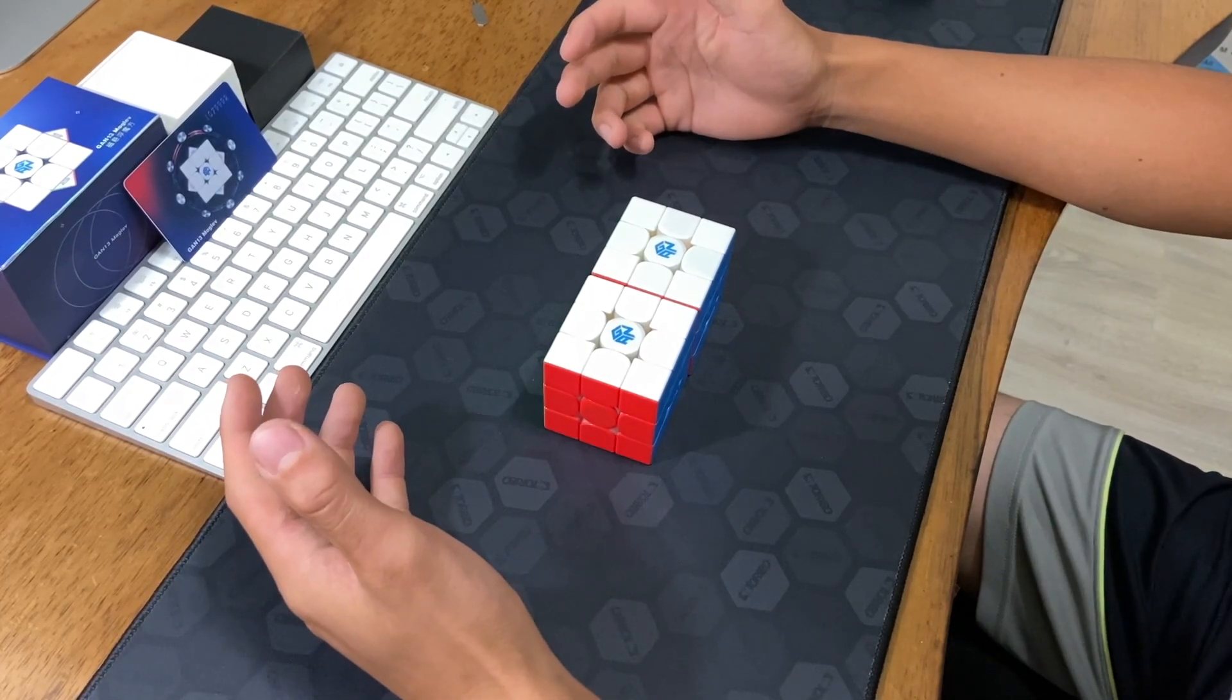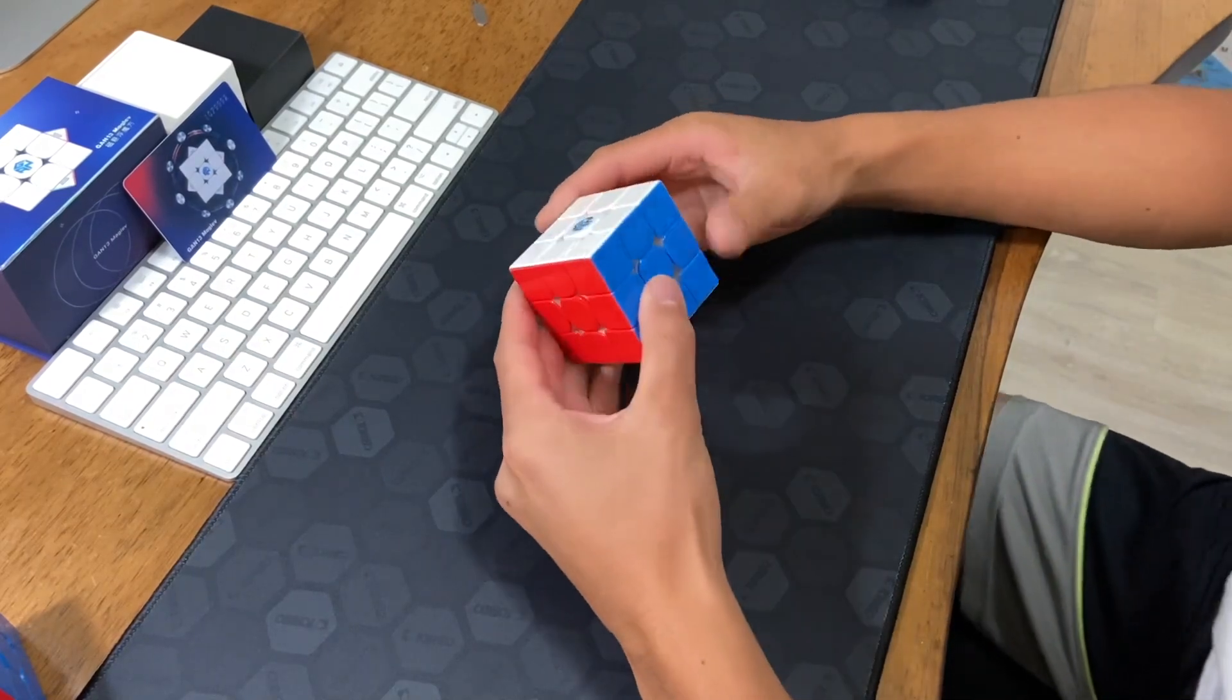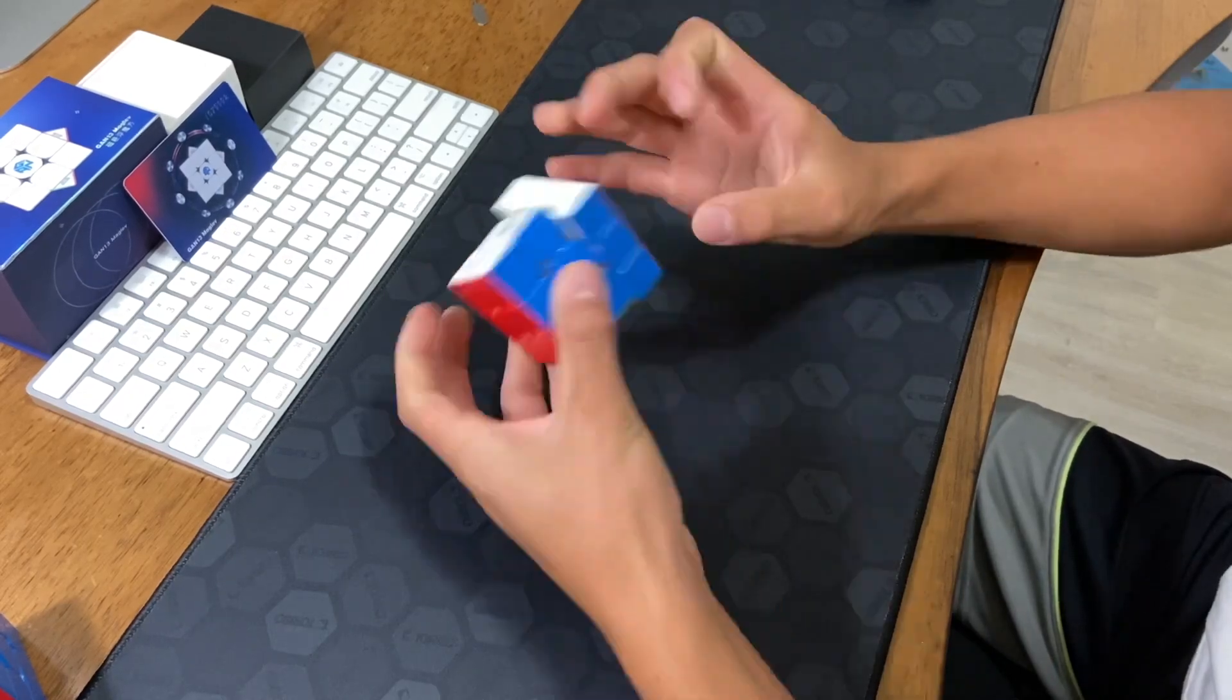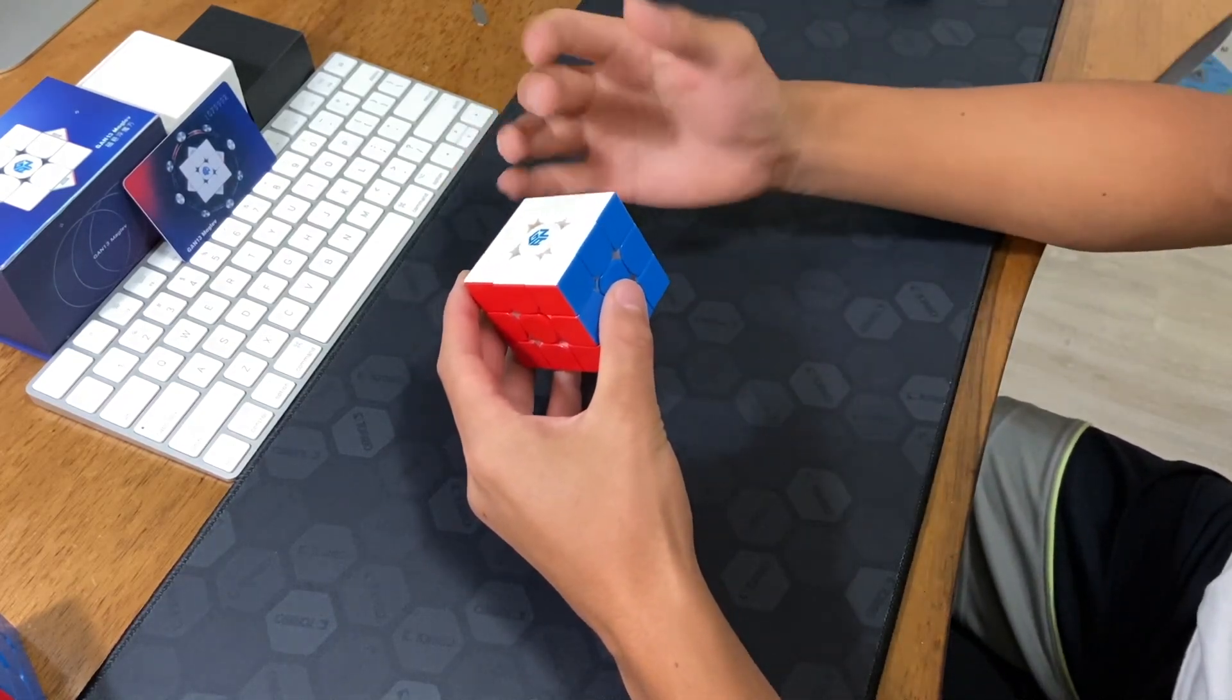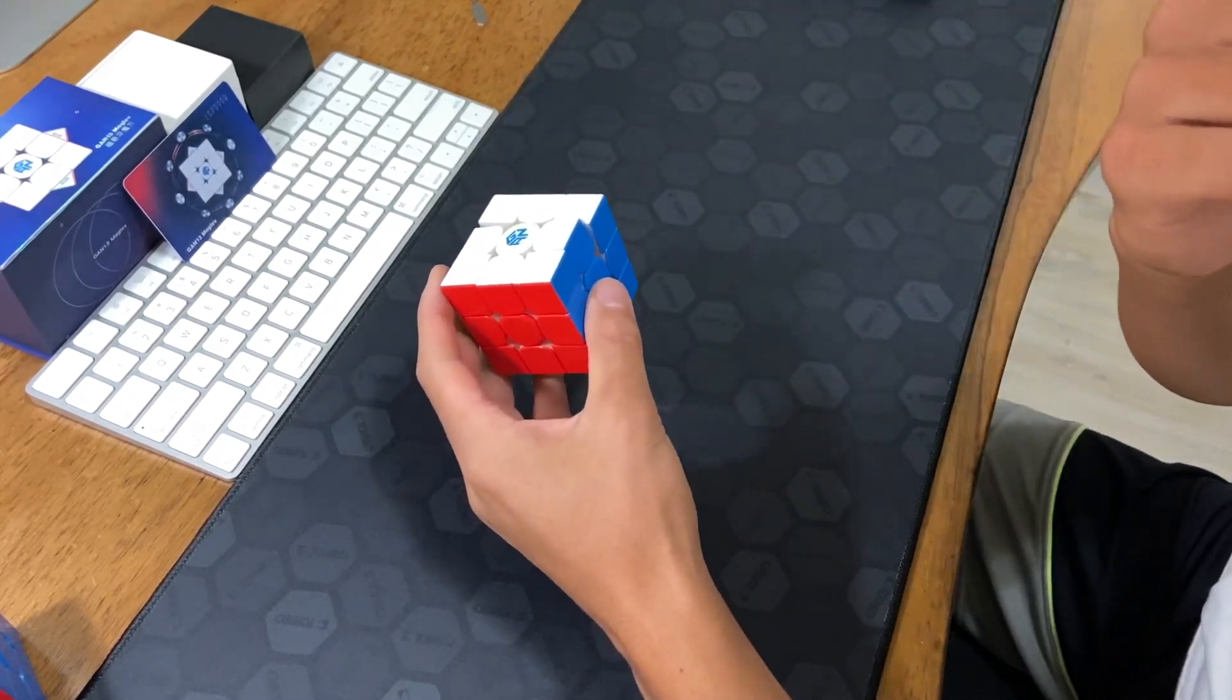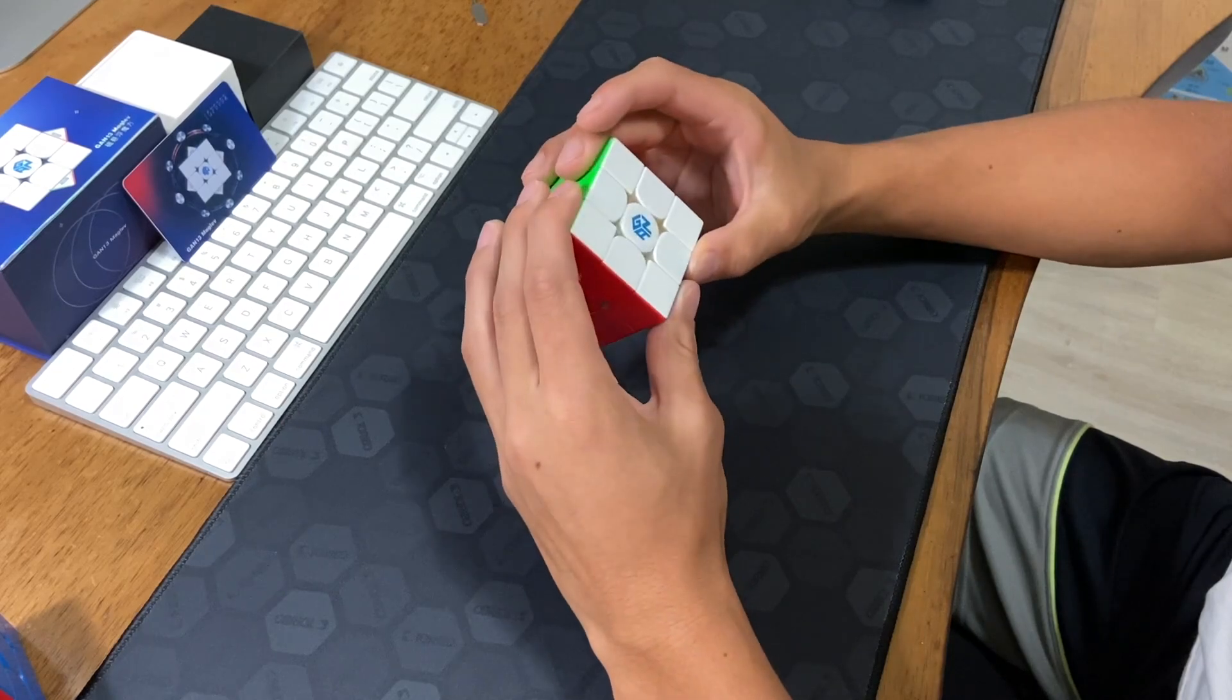Alright, hello everybody. This is Matty, and today I'm going to be going over what I think about the GAN 13 and what my settings are. Overall thoughts: I think this cube is a big improvement from the 12. The turning is smooth, obviously, because that's what GAN is known for. But at the same time, with the new edge magnets, it almost feels more snappy after you turn it, but during the turn it's still smooth. It's very hard to explain, but it's basically super easy to turn and also very stable, without sacrificing corner cutting, which is pretty hard to do in a cube.